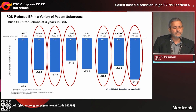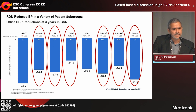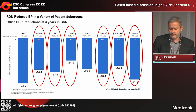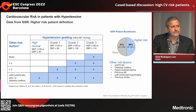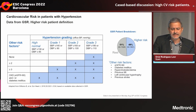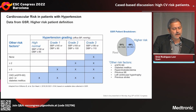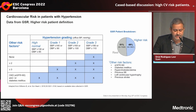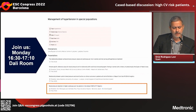We know from the GSR registry that patients with diabetes, atrial fibrillation, chronic kidney disease, elderly patients, or those with coronary artery disease or prior stroke improved their blood pressure control after renal denervation. We will present on Monday an analysis performed on patients from the global registry regarding the burden of cardiovascular risk. I can advance that the results are quite good in these patients with high and very high cardiovascular risk. Thank you very much.